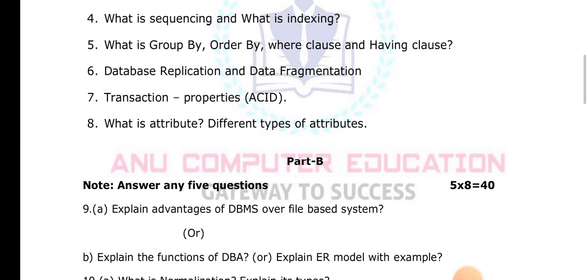What are the functions of a DBA (Database Administrator)? The DBA is the main person responsible for the database. The DBA creates the schema — defining what tables exist and what columns they contain. The DBA provides training to users, grants permissions using GRANT and REVOKE commands, and controls what data each user can access.